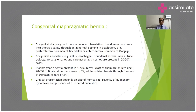Diaphragmatic hernia presents in 1 in 2,000 births and most are left-sided, accounting for 70–85%. Bilateral hernia occurs in 5%, while isolated hernia through the foramen of Morgagni is rare at less than 2%. Clinical presentation depends on the size of the hernial sac, severity of pulmonary hypoplasia, and the presence of associated anomalies.